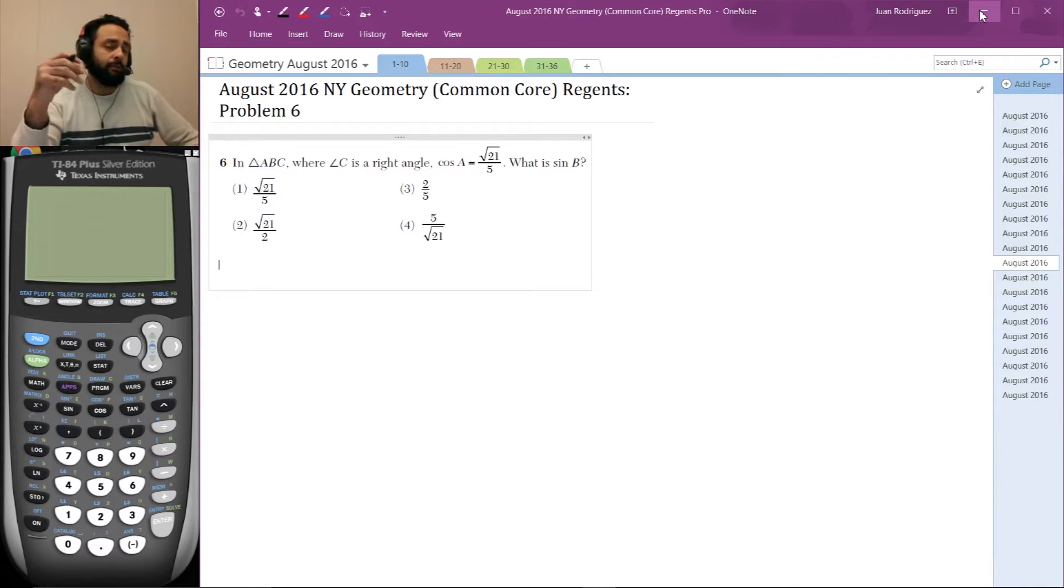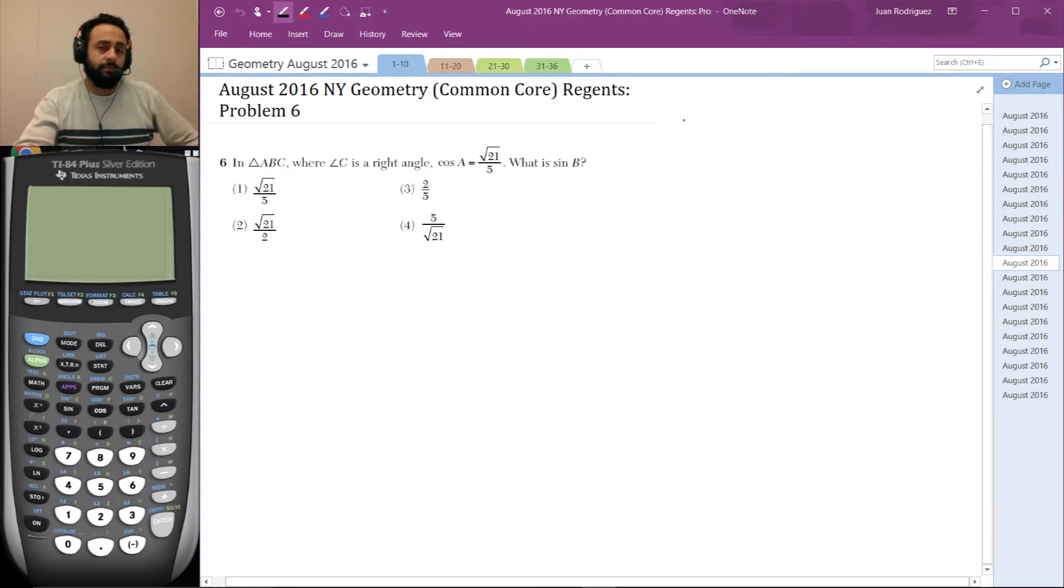If you can't get the answer at this point, you need to remember SOH-CAH-TOA. Sine θ equals opposite over hypotenuse, cosine θ equals adjacent over hypotenuse, and tangent θ equals opposite over adjacent.